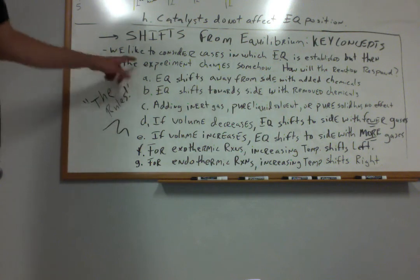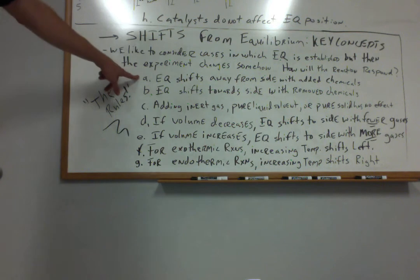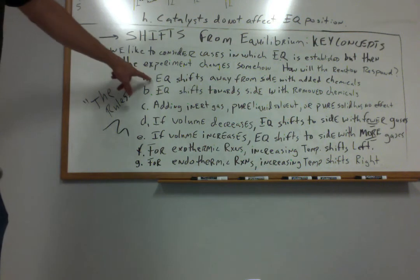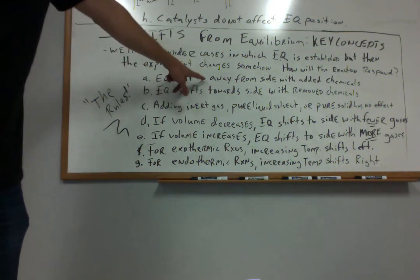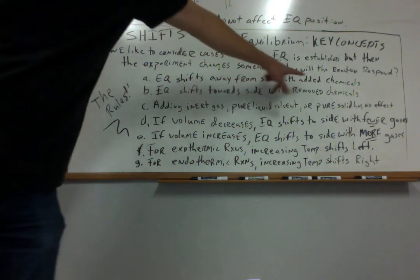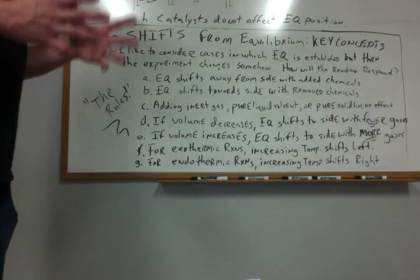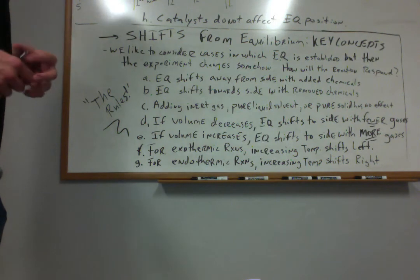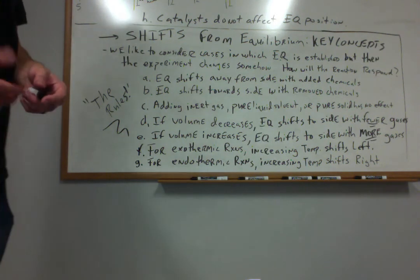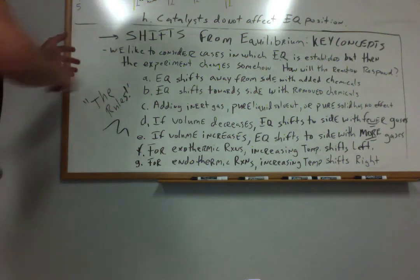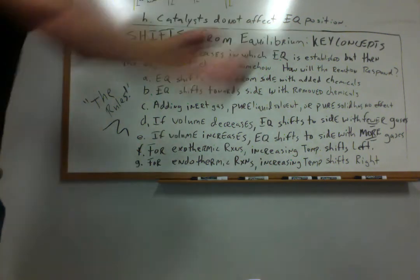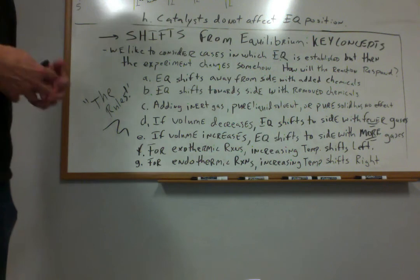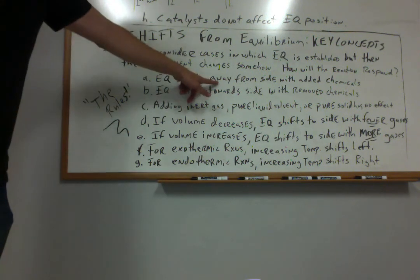These rules are the ones we summarized in class, and you can use these to complete your homework assignment. Rule A: an equilibrium will shift away from the side with added chemicals. So if you have your equilibrium system and you increase the amount of a certain chemical, the system shifts away from the side where that chemical appears. If you add more reactants, it shifts to the right; if you add more products, it shifts back to the left.